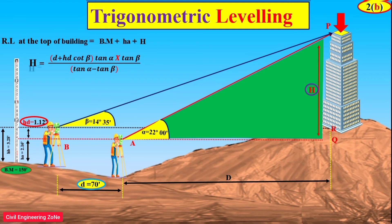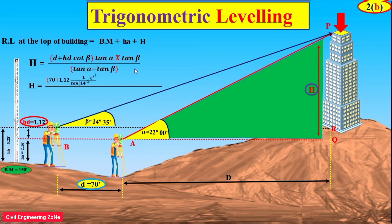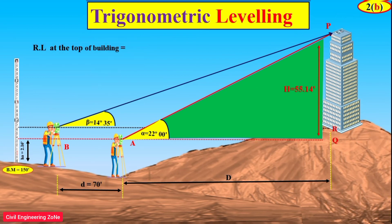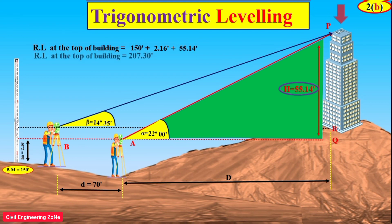By putting all values into this formula, we can get the value of H. We can then easily calculate the reduced level of the top of the building by taking the value of benchmark plus H_A plus H, which gives us the reduced level of the top of the building.